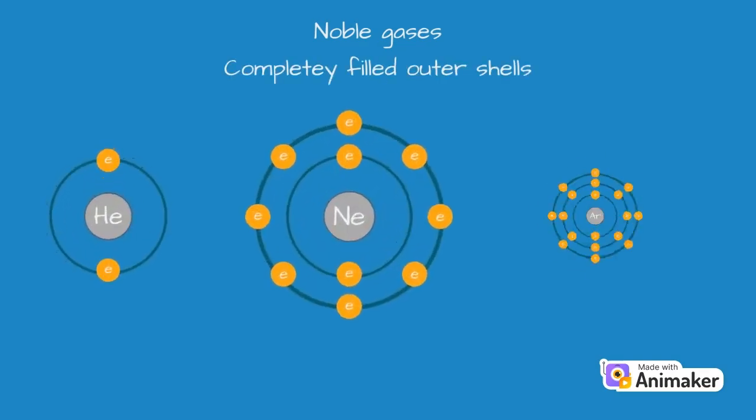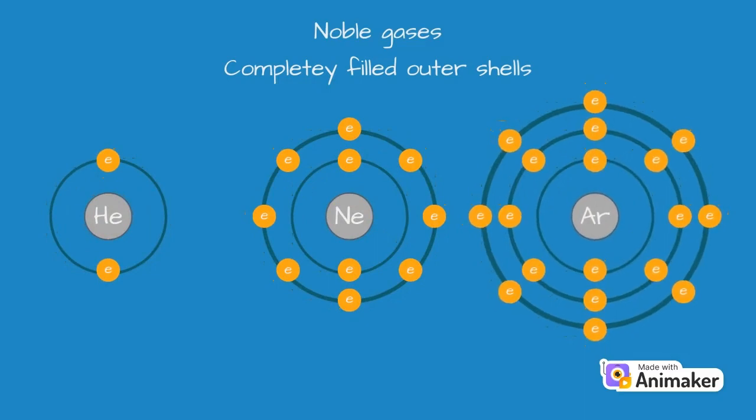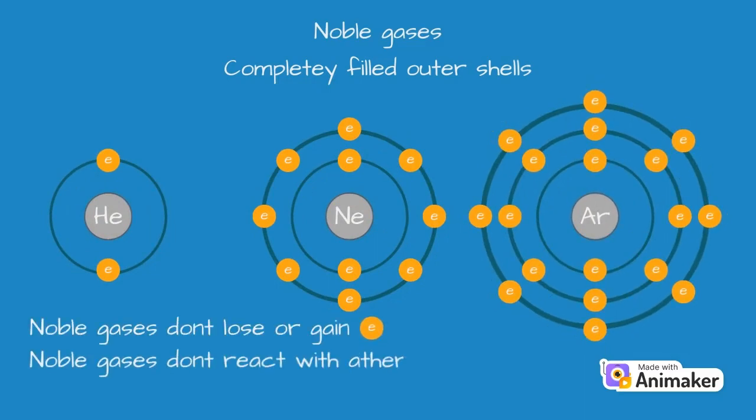However, there are some exceptions. The noble gases all have completely filled outer shells as we can see with helium or neon or argon. And because of this they don't want to lose or gain any electrons and so they don't react with any other atom, so they have a valency of 0.